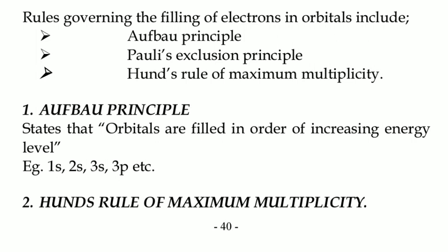Remember, the energy level of a certain orbital can be found by adding the principal quantum number n plus the azimuthal quantum number l.